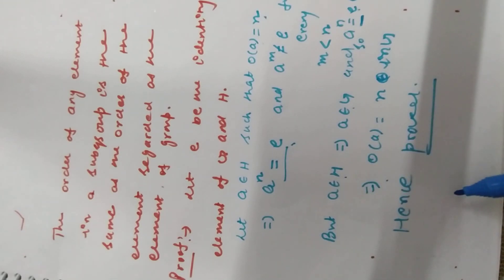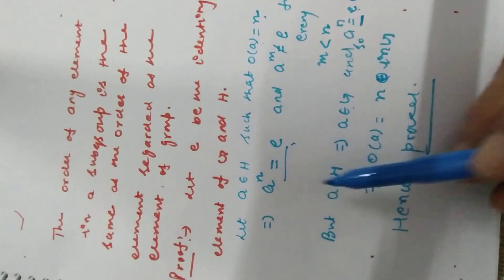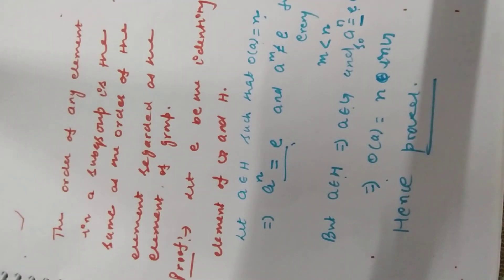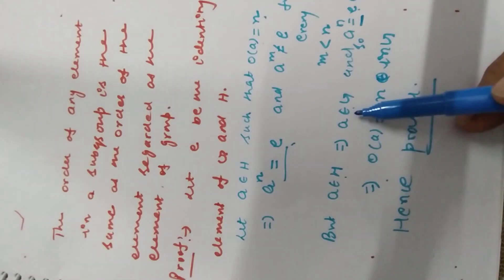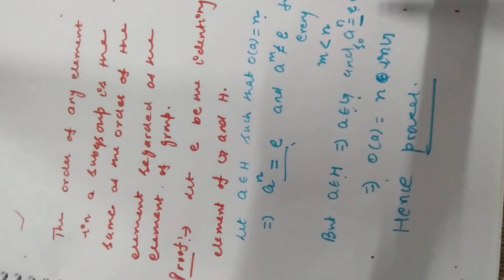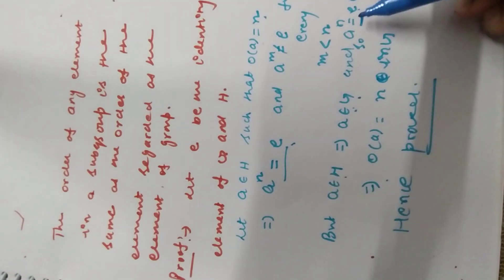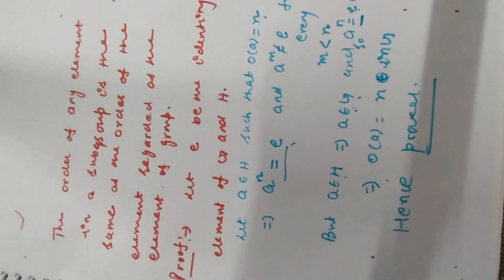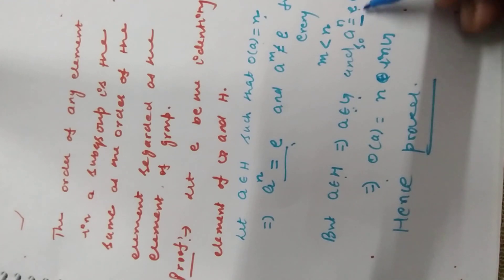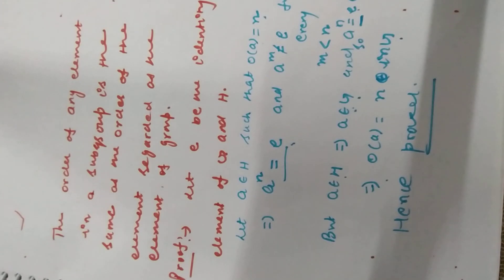But a jo hai H ko belong kar raha hai, to hum prove karne ja rahe hain ki order of element a, jo G mein belong karta hai, woh bhi barabar hai. Isliye a belongs to G, and we have e belongs to G, but this e is equal to a raised to power n. Therefore a raised to power n is equal to e, belongs to G. And hence order of a is equal to n in G.